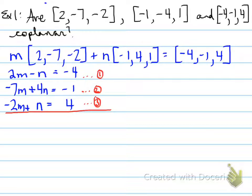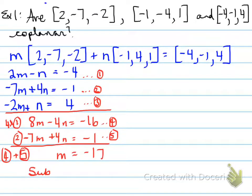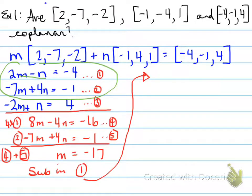Let's use equations 1 and 2. Looking at equation 1, I want to eliminate the n's, so I'm going to take 4 times equation 1. For equation 2, I'll take it as is. We eliminate the n's by adding lines 4 and 5: 8m plus negative 7m equals m, which equals negative 17. Now we substitute this value into equation 1 and find that the n value is 30.